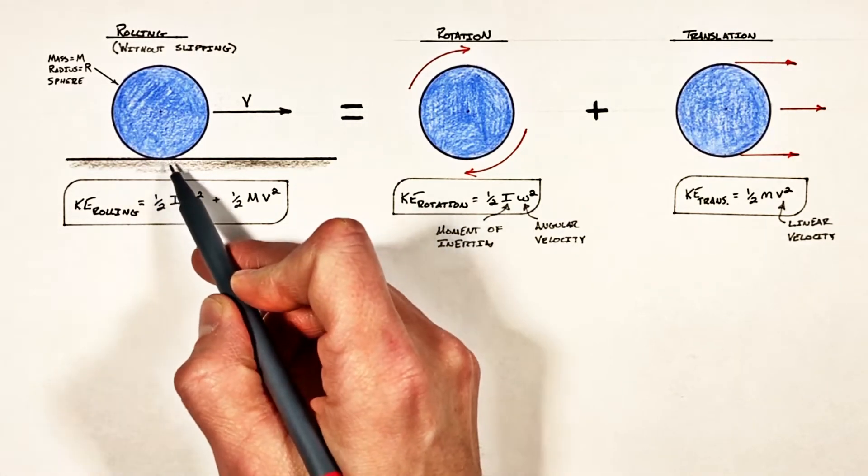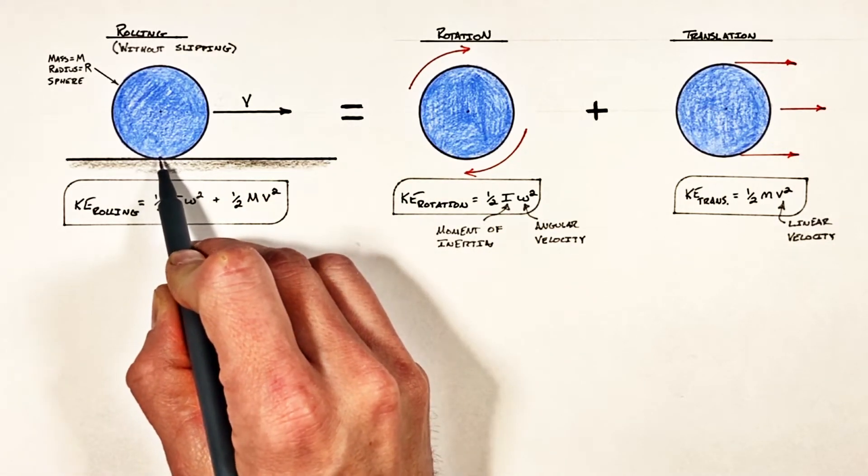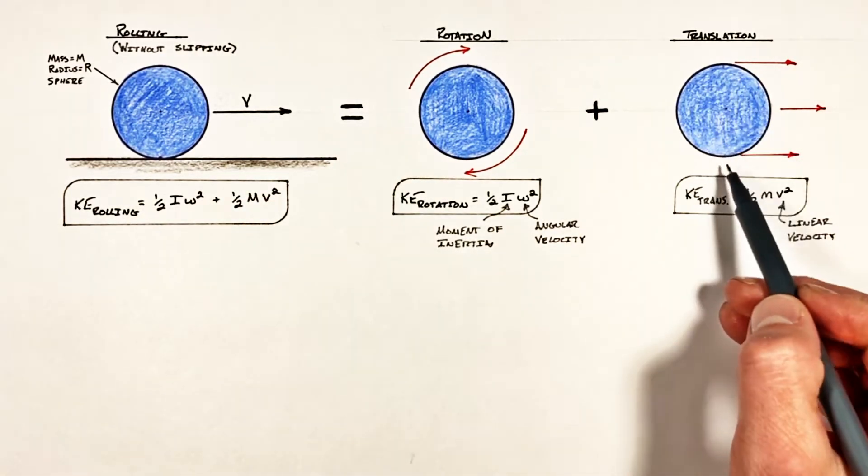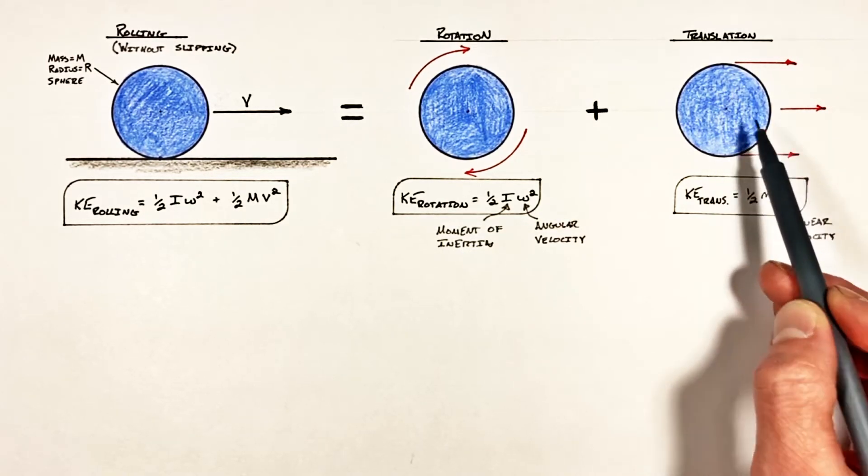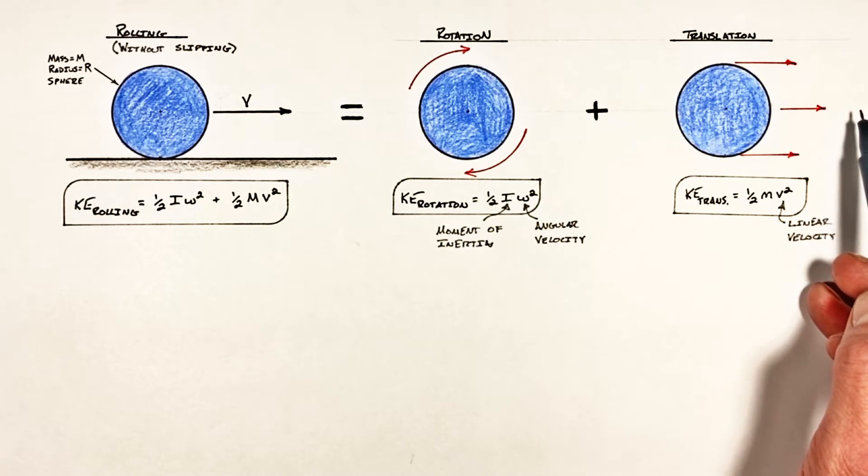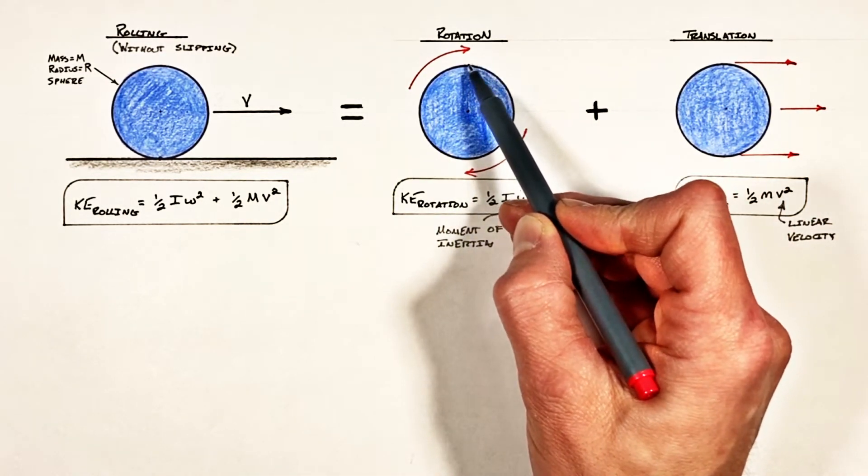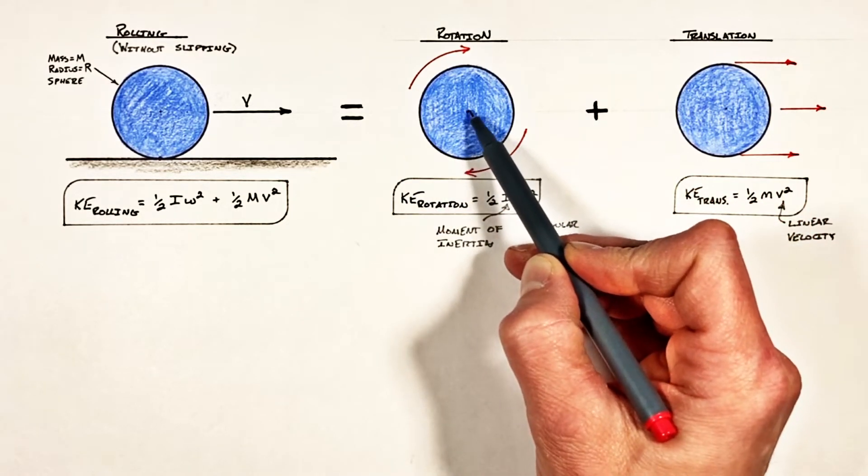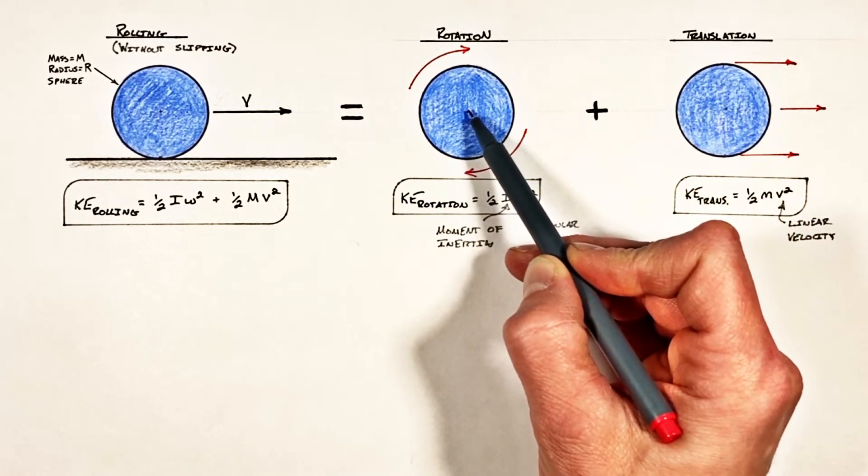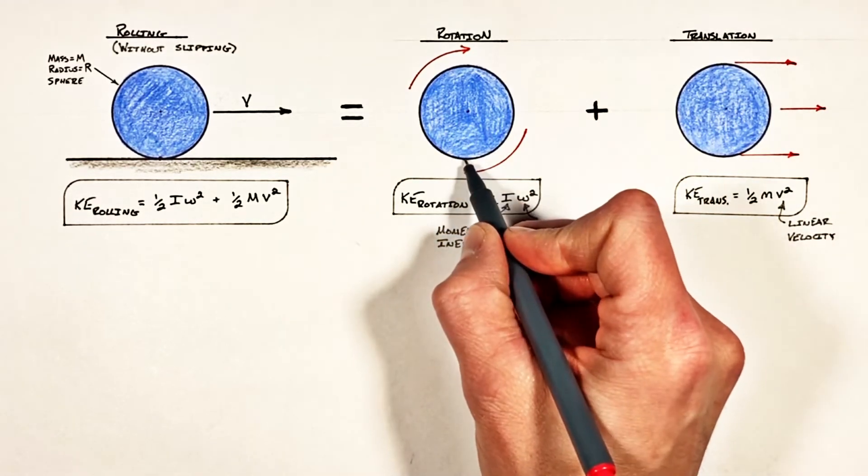See when the sphere is rolling along without slipping, this point right here which touches the ground does not move. In translation, anytime something's moving forward, all points on that object are moving forward at the same velocity. In the case of rotation, you might have the top of this wheel rotating forward, the bottom moving backward, and this central point right here about which it's rotating not moving at all.